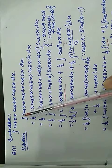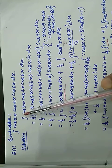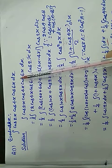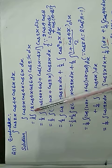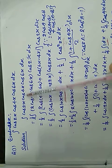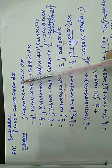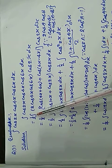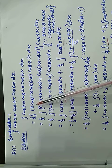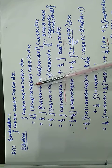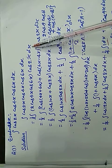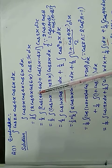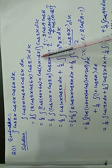We have to evaluate the integration of cos2x · cos4x · cos6x dx. This will be equal to: take cos4x and cos6x together, multiply by 2 and divide by 2. It becomes 1/2 integration of 2cos4x · cos6x · cos2x dx. We know that 2cosA·cosB = cos(A+B) + cos(A-B).